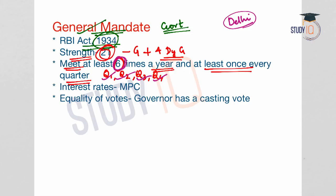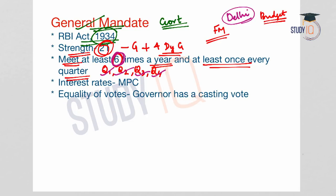In that meeting, the Finance Minister outlines the government's economic philosophy behind the policy initiatives proposed in the budget. Besides Delhi and Mumbai — where the RBI is headquartered — the board generally meets at various state capitals, as most state capitals have branches of the RBI.